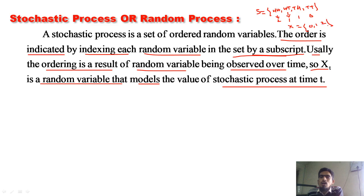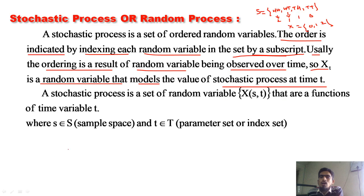Here in the stochastic process, you collect multiple random variables. Thus a stochastic process is a set of random variables x(s, t) that are a function of time variable t, where small s belongs to capital S — the sample space.